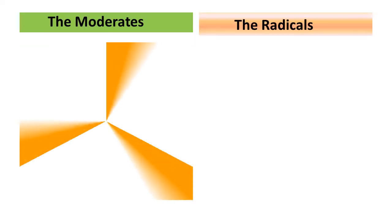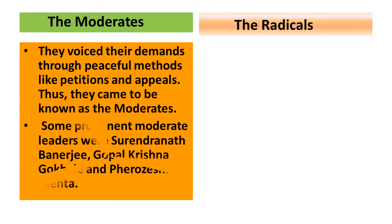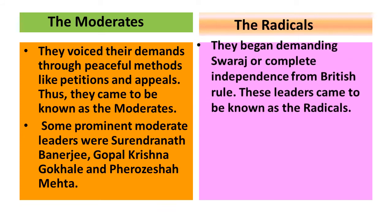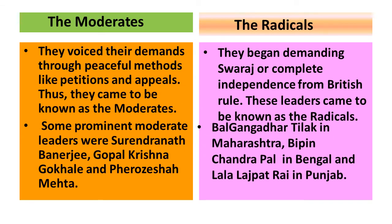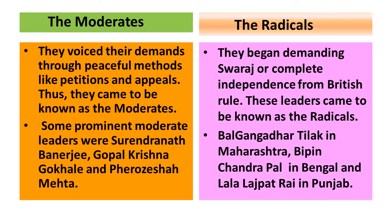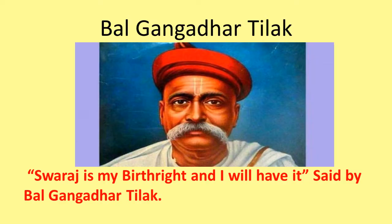Next, we will discuss about moderates and radicals. Moderates voiced their demands through peaceful methods like petitions and appeals, and so they came to be known as the moderates. On the other side, the radicals began demanding Swaraj, or complete independence from the British. Leaders like Bal Gangadhar Tilak in Maharashtra, Bipin Chandra Pal in Bengal, and Lala Lajpat Rai in Punjab came to be known as the radicals. Bal Gangadhar Tilak said, 'Swaraj is my birthright and I will have it.'